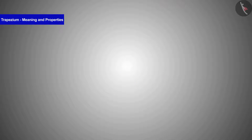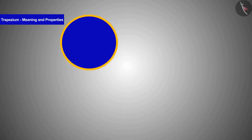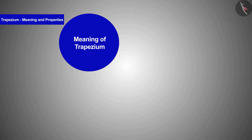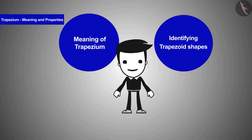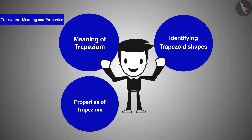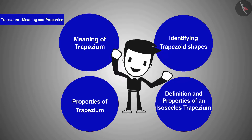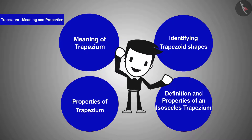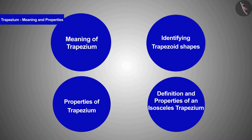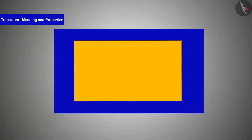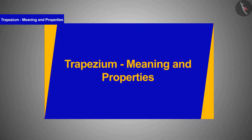Therefore, in this isosceles trapezium, angle 1 = angle 2 and angle 3 = angle 4. Today in this video we learnt the meaning of trapezium, identifying trapezoid shapes, properties of trapezium, and the definition and properties of isosceles trapezium. In the next video we will see some examples based on these.